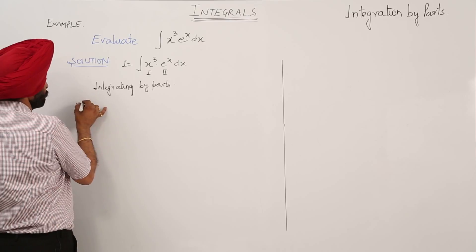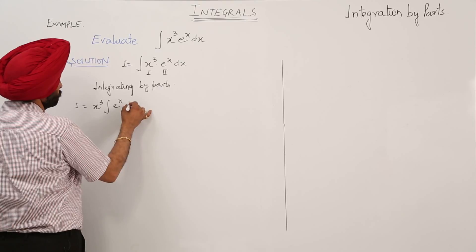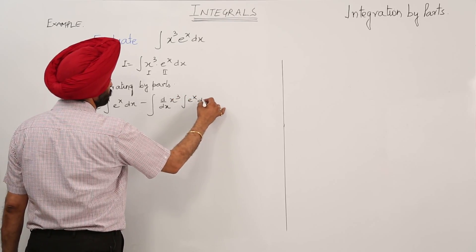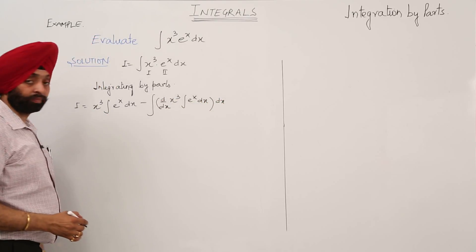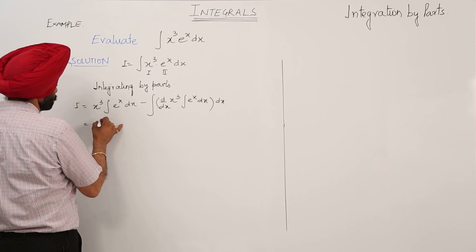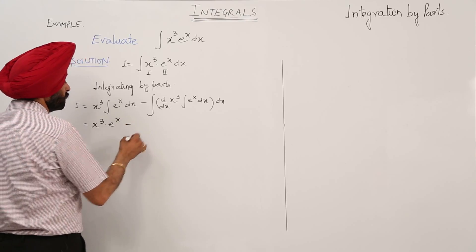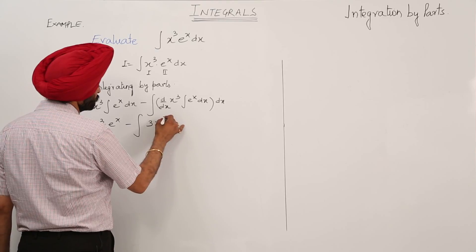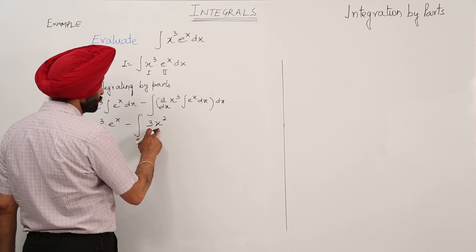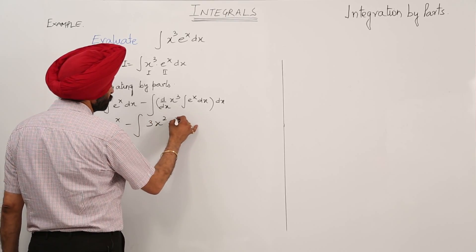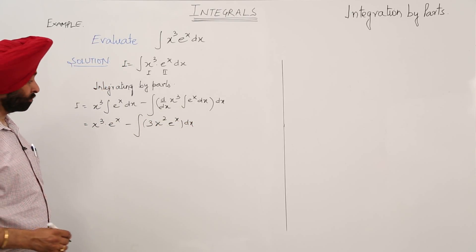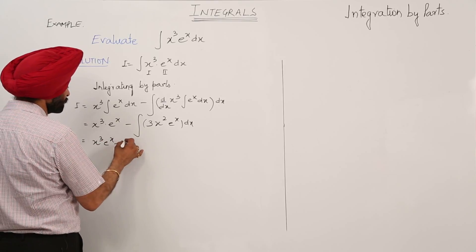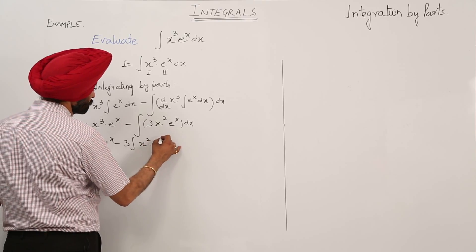We apply integration by parts: first function as it is, times integration of second function, minus d by dx of first function times integration of second. This becomes x cube e raise to power x minus integration of 3x square times e raise to power x dx — that is, x cube e raise to power x minus 3 integration of x square e raise to power x dx.